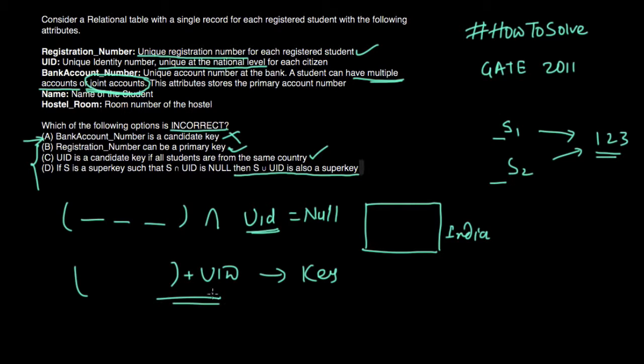So this is obvious, this is correct as we know if a b c is a key, then inclusion of any attribute further will not disturb and it will remain as a key. So if a b c is a key then a b c d will also be a key. So this is correct. Inclusion of an attribute UID in super key s will make it remain a super key. So this is correct. So all three are correct and first one is wrong and which is our answer.